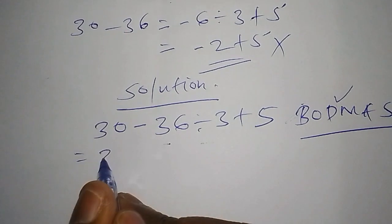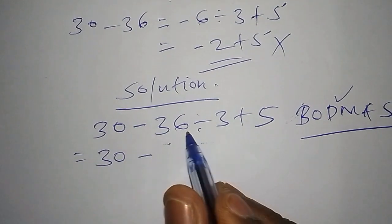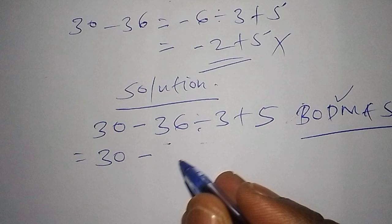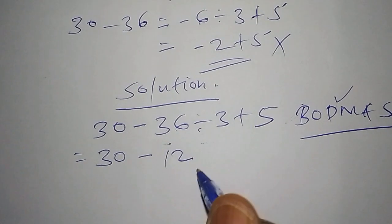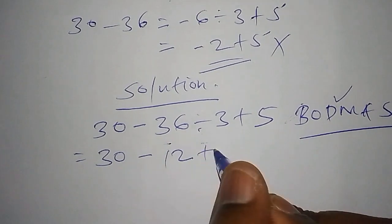So the first step will be 30 minus, then 36 divided by 3. We have 12 there, then 12 add to 5.